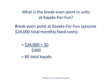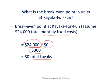Now we have everything we need to figure out the break-even point at Kayaks for Fun. We take the monthly fixed cost of $24,000, the target profit is zero, and divide by the weighted average unit contribution margin of $300. That tells us we need to sell 80 kayaks per month to break even. We can split that out by multiplying the sales mix for each kayak type by 80, but in total we have to sell 80 kayaks to break even on a monthly basis.